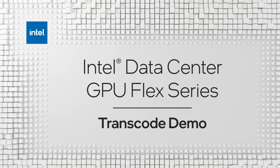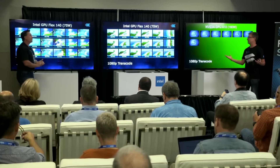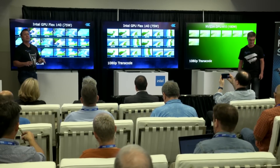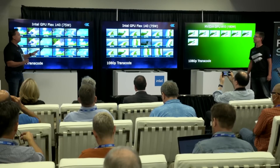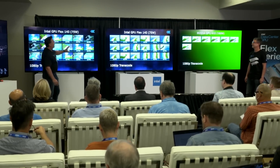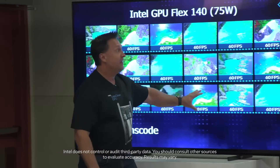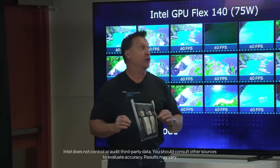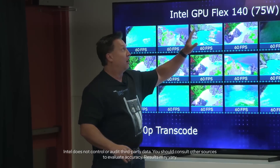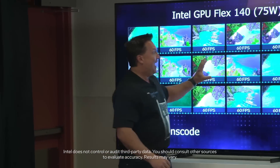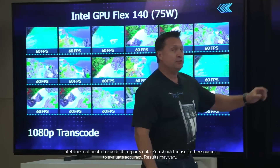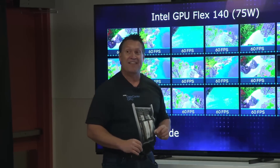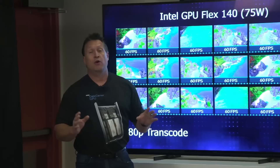We want to show the group what type of media capabilities these products have, in particular the Flex 140. The 140 is a media powerhouse. You can see here I've got two screens, and each of these screens is running 18 streams that are being transcoded on a single 75-watt Flex 140 card. So that's 36 streams total being transcoded on this little card at just 75 watts.